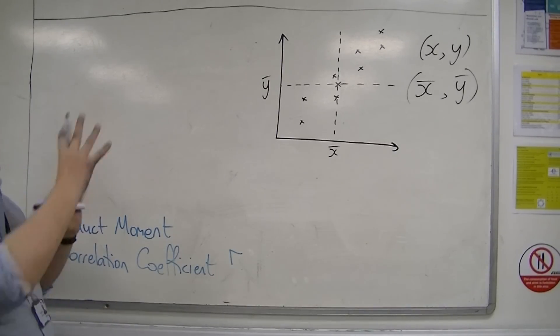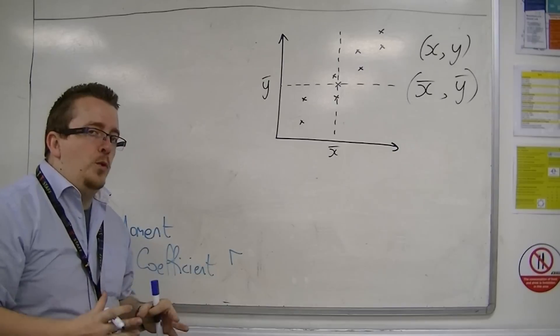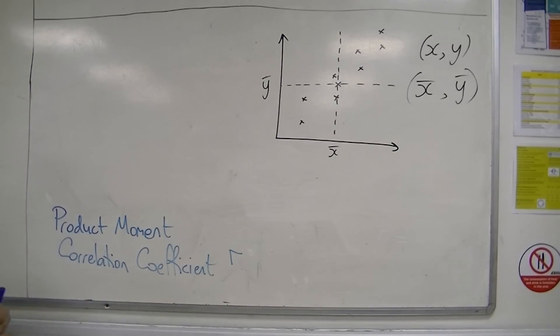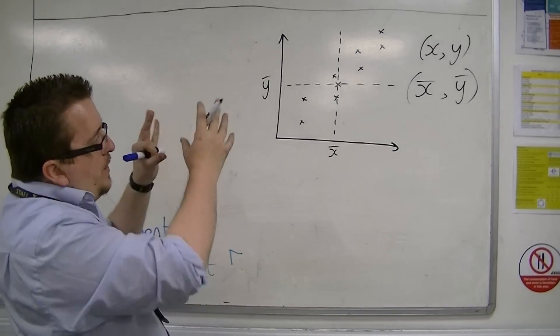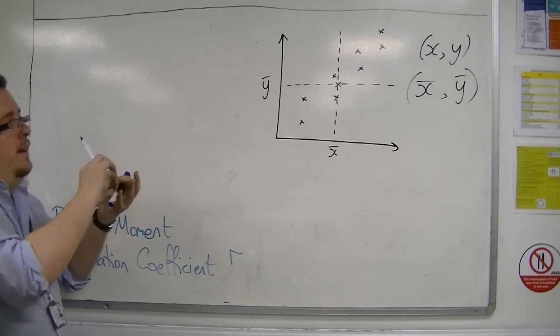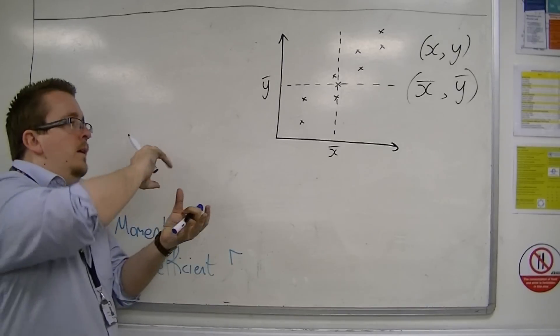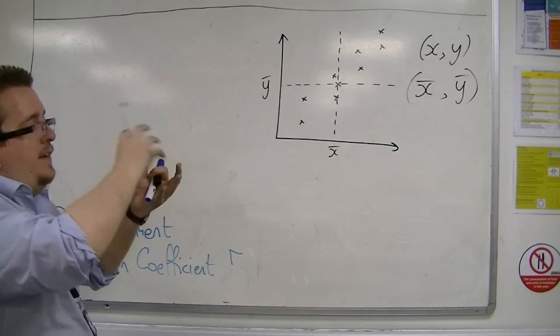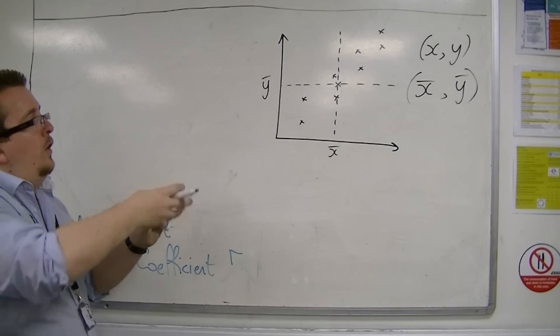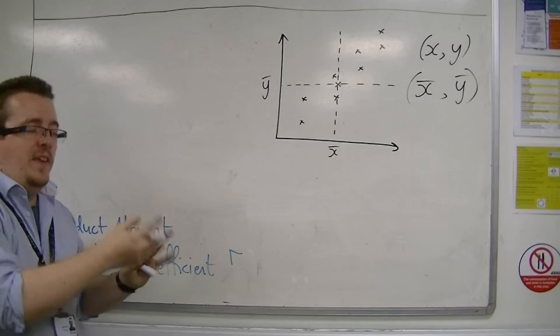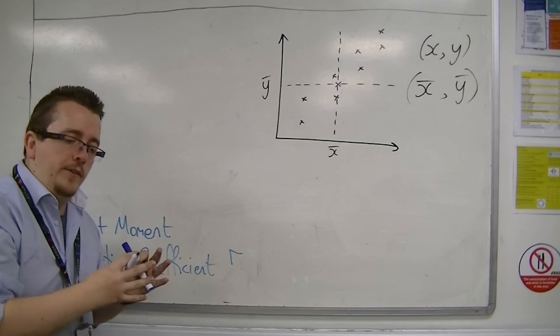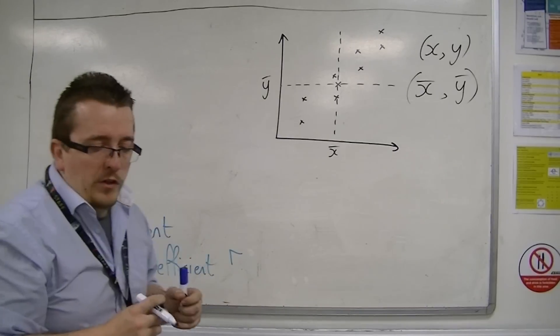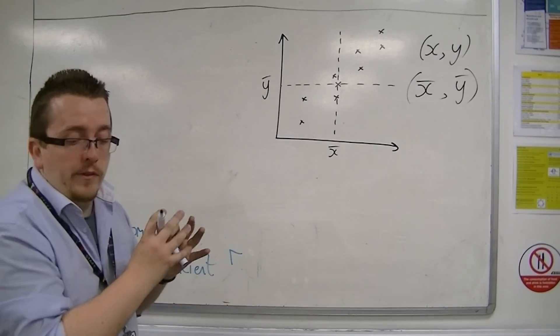You can see that it kind of splits your data up into four quadrants. And the calculation is then looking at the standard deviation of the x's and the standard deviation of the y's. And you also introduce a concept known as the covariance.